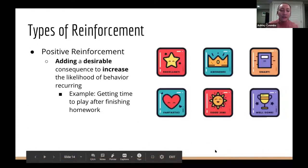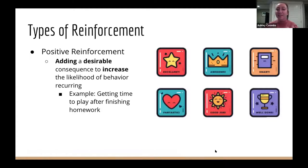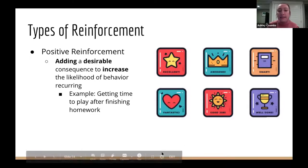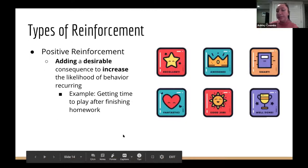There are a few different types of reinforcement. Positive reinforcement means adding something desirable to increase the likelihood of a behavior happening again. For example, a child finishes their homework and is reinforced by getting time to play outside with friends or on their electronics. That's their reward for completing the task they were assigned.